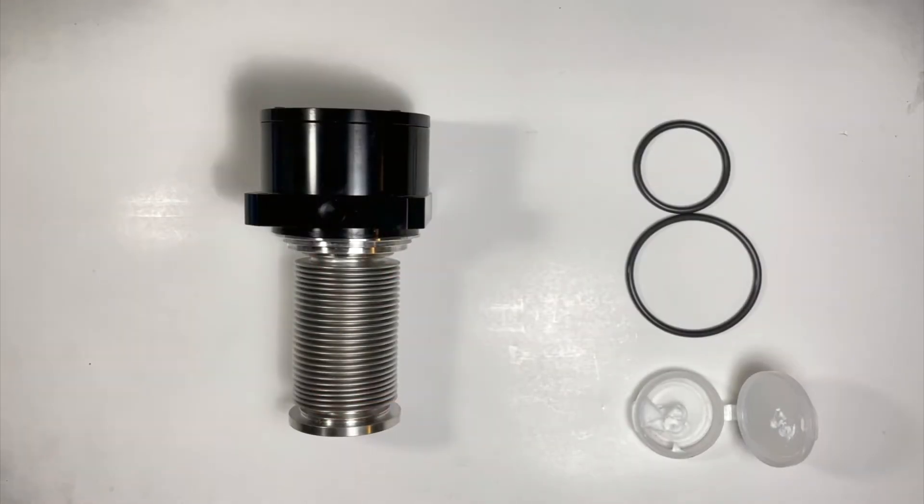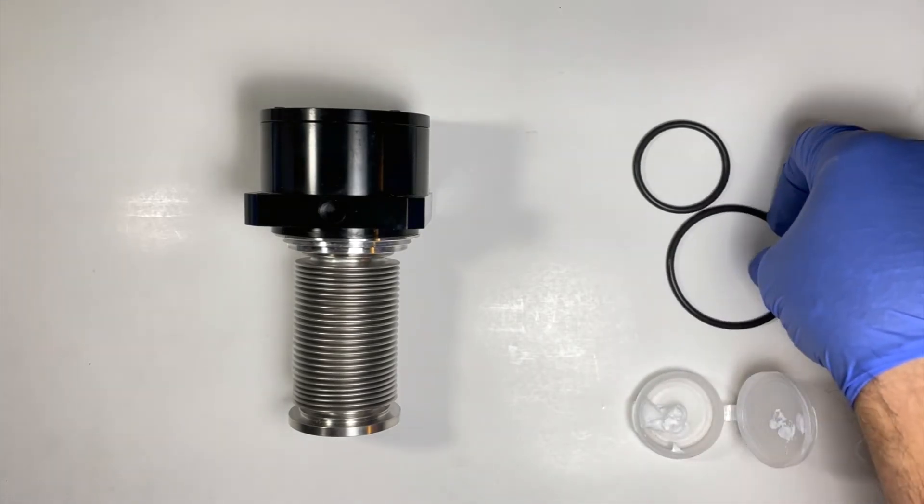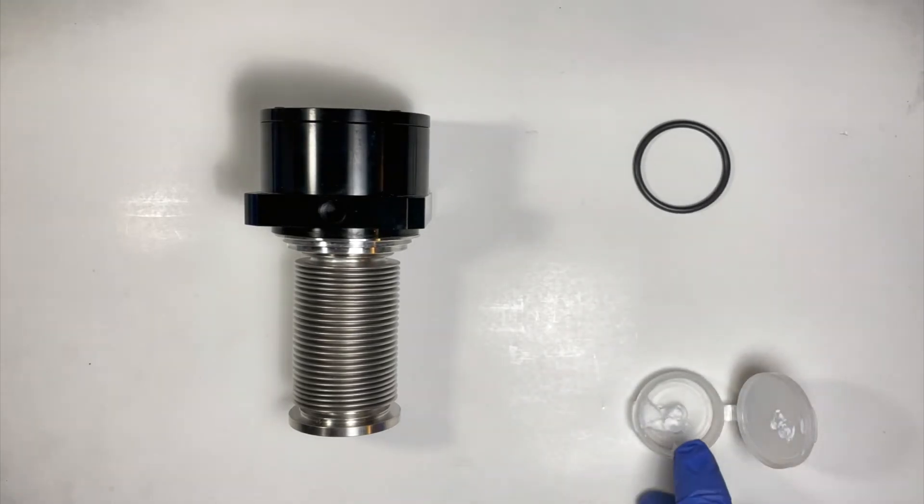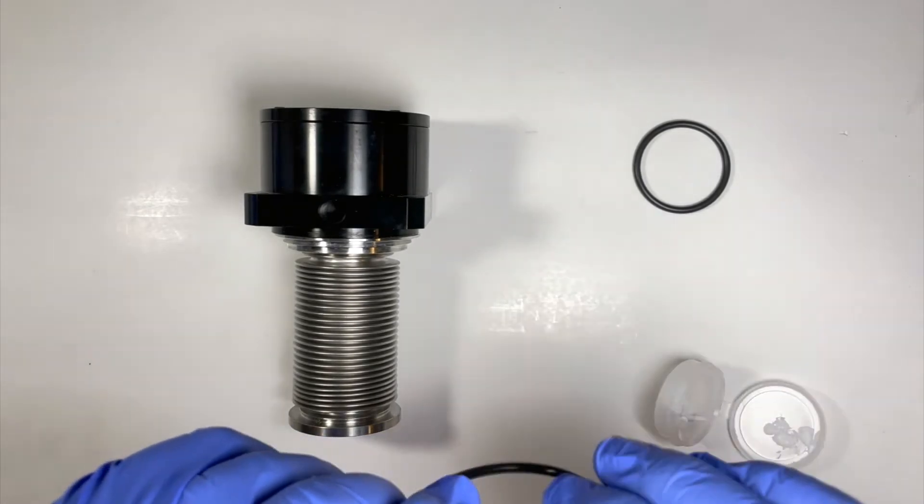Before installation, the new O-ring seals will need to be installed onto the new internal. To do this, apply a small amount of the included Fomblin vacuum grease onto the seals.